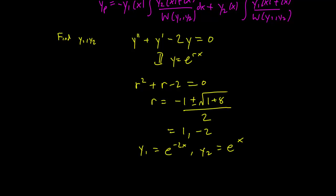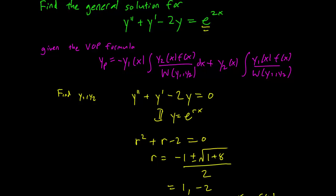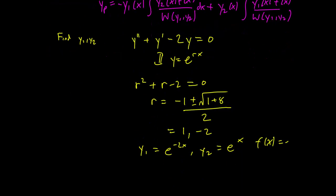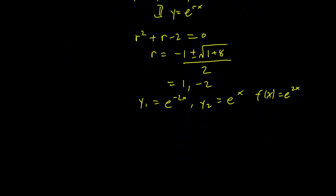Right, so we have most of the ingredients in our formula. So we have y1, we have y2, we have f(x), which is just e^(2x) over here. And I suppose that the next thing we need to find is the Wronskian. So let's do that.